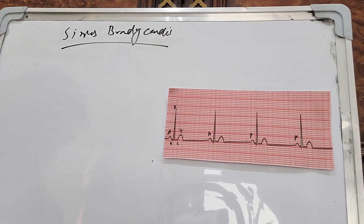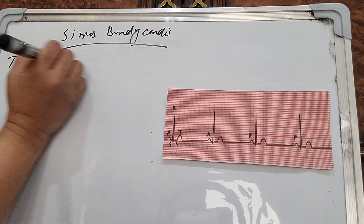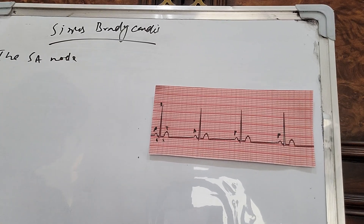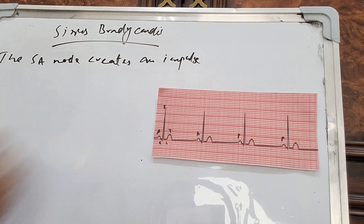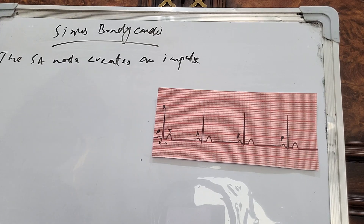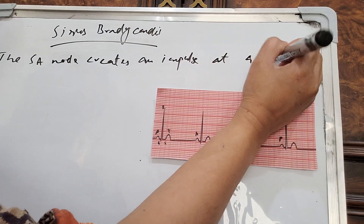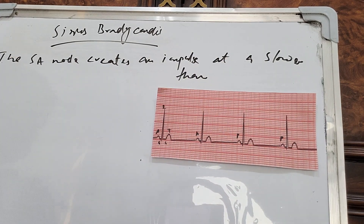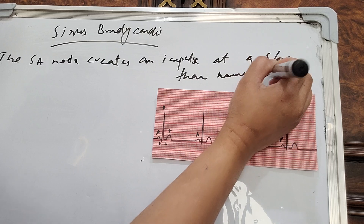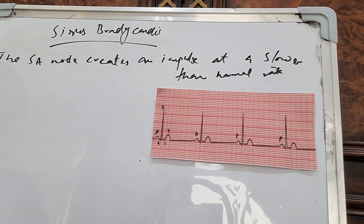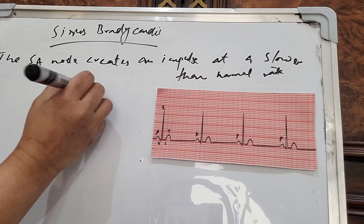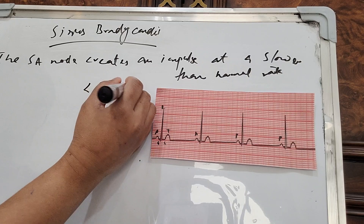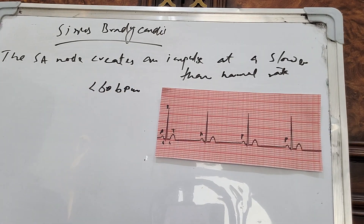What is sinus bradycardia? The SA node creates an impulse at a slower than normal rate — less than 60 beats per minute. Less than 60 beats per minute is sinus bradycardia.